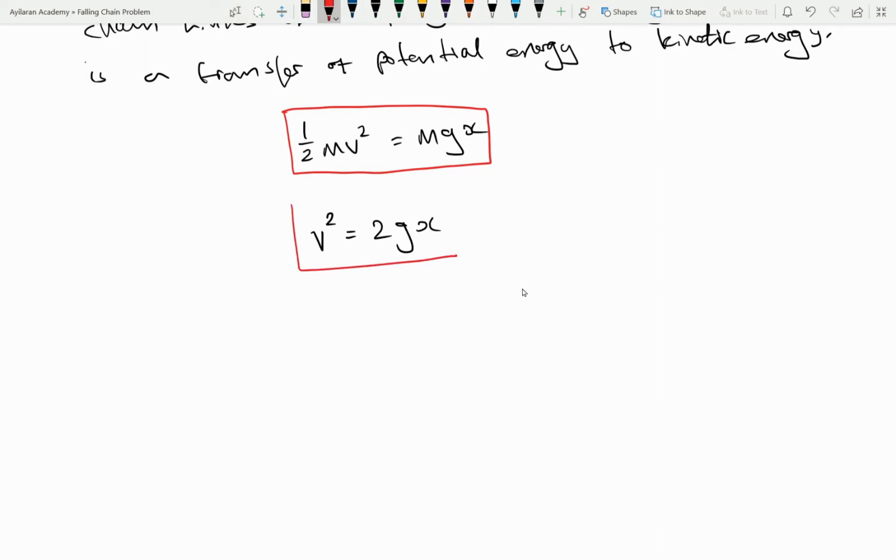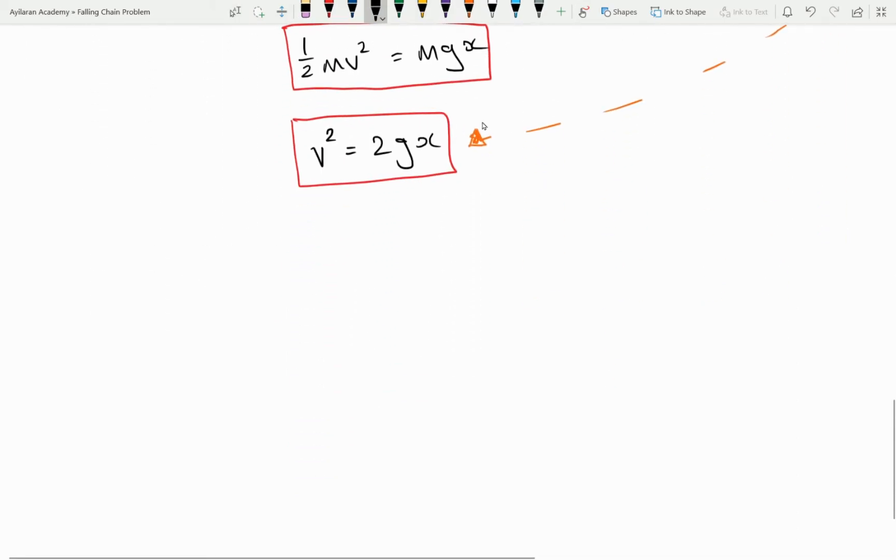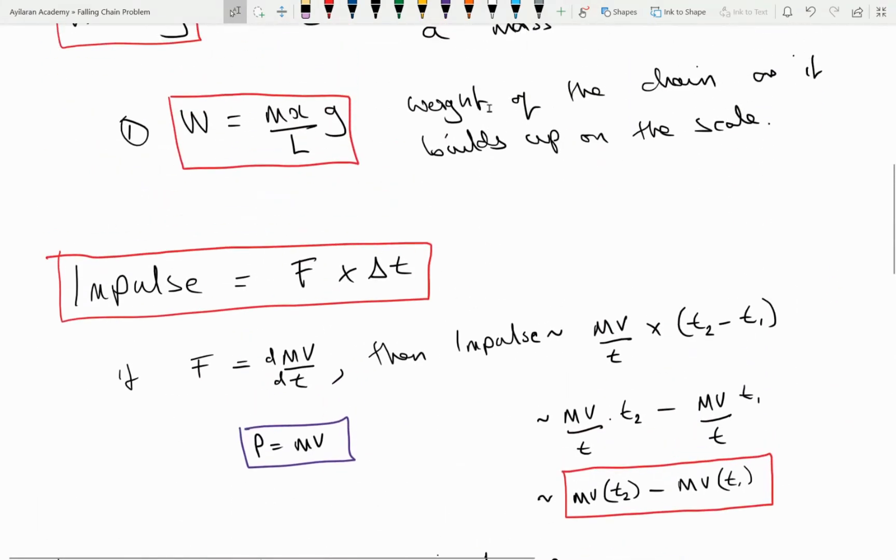I divide both sides by M multiply both sides by 2 and I have V squared equals 2 G X. So at the end what I do is that I substitute this V squared into our expression for impulse. So this enables us to derive our second expression for the force on the pan and that is 2 G X M over L.